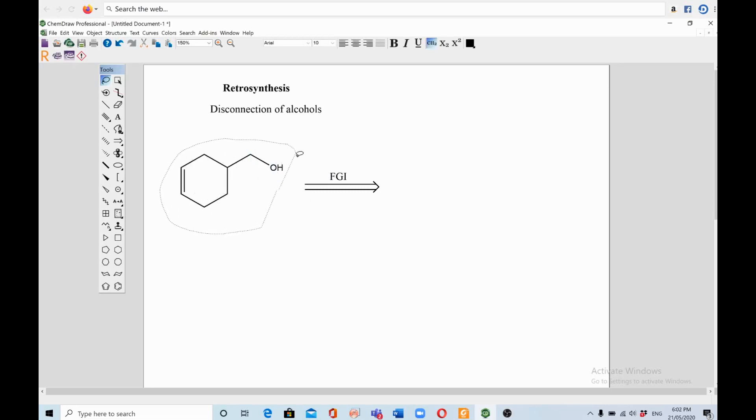For example, you need to remember in your mind that alcohols can be prepared from aldehyde. So one way to convert this functional group will be to convert this into aldehyde. And aldehyde are carbon compounds, so I need to put the carbon group and one hydrogen, right. So this is FGI.